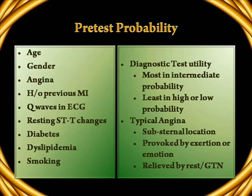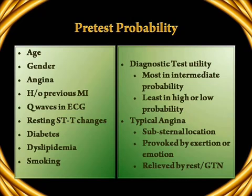The diagnostic utility of exercise stress testing will be maximum in patients who have intermediate probability for CAD. In those who have very high or very low probability of CAD, this test is not going to yield important gain in terms of diagnosis — either exclusion or confirmation. It is the group with intermediate probability that is important for us to focus our attention on, and then do a treadmill test to decide whether they really have coronary artery disease or whether we can exclude it.